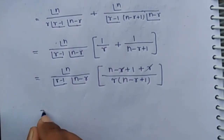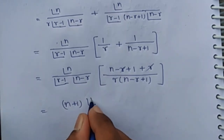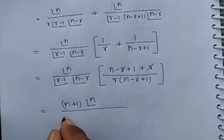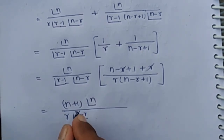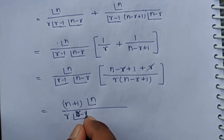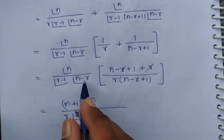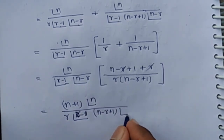The r terms cancel out, leaving n plus 1 in the numerator. So we have factorial n over factorial r times factorial r minus 1, times factorial n minus r, which simplifies with n plus 1 in the numerator.